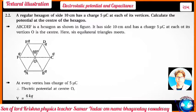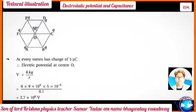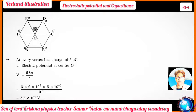You can see in the figure, A, B, C, D, E, F is the hexagon. It has a side of 10 centimeters and has charge 5 microcoulombs at each of its vertices. O is the center. Here 6 equilateral triangles meet at the center, so the side equals the radius R = 0.1 meter. Every vertex has charge 5 microcoulombs. The electric potential at center V = 6 × KQ/R.